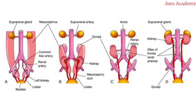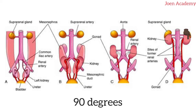Initially, the hilum of the kidney is directed ventrally, that is anteriorly, but when it reaches its adult position, the kidney undergoes medial rotation through its longitudinal axis at an angle of 90 degrees. With that, the hilum comes to face medially.